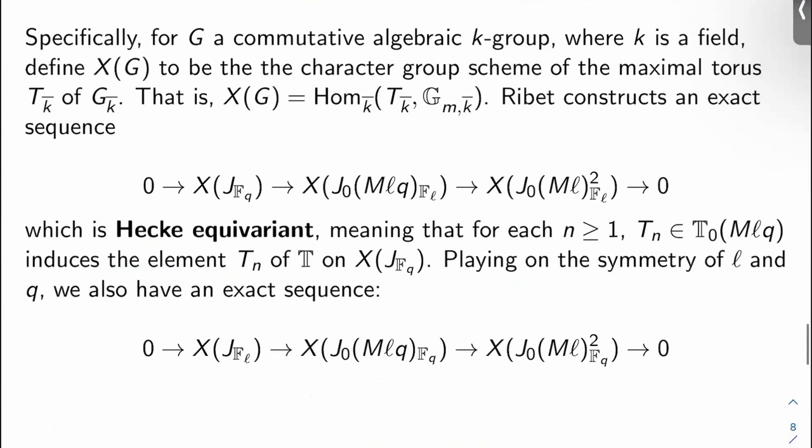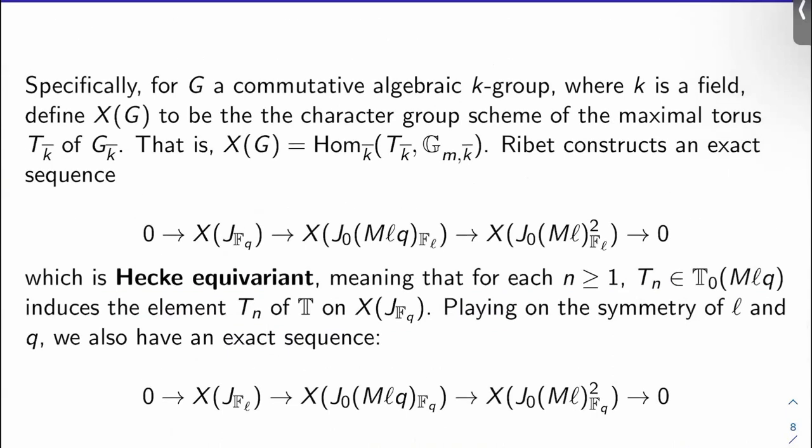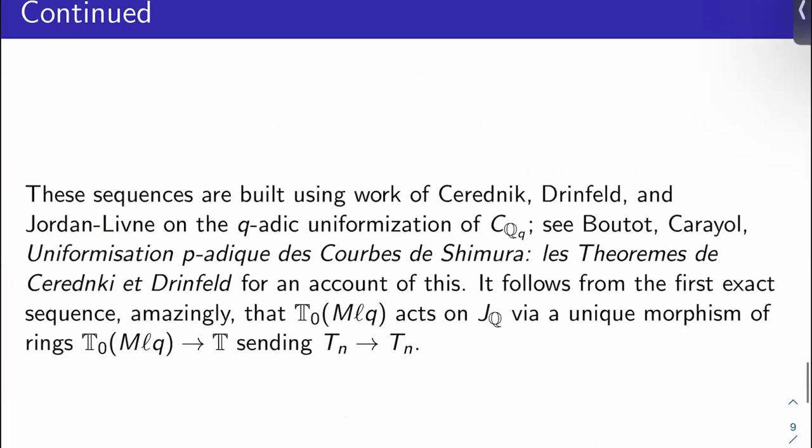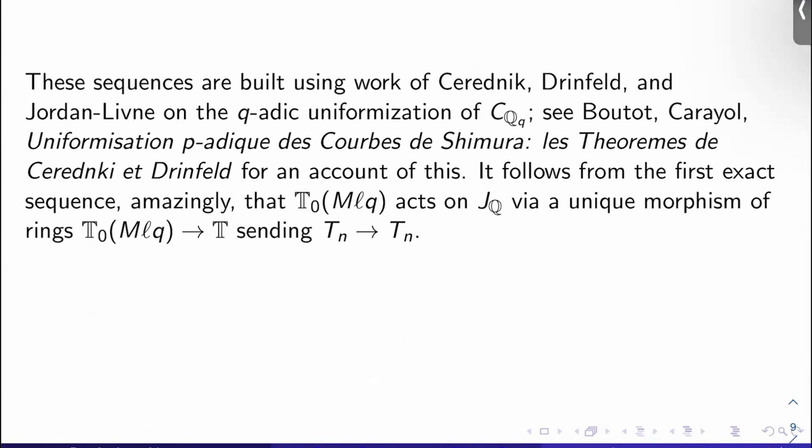Okay, so remember Mazur had two exact sequences, now Ribet has two. Ribet's going to end up with two more by the end of this video, so we're going to have six exact sequences total that we'll need for the proof. Actually we're going to need seven, but these sequences are built using the work of a variety of people. I mean, you've got Drinfeld, you've got Carayol, and so on. Basically, you use the q-adic uniformization of C thought of as living over Q_q, the q-adic numbers. Okay, I gave you a reference here to learn more about that.